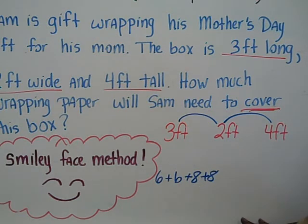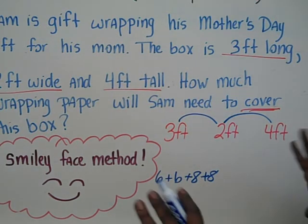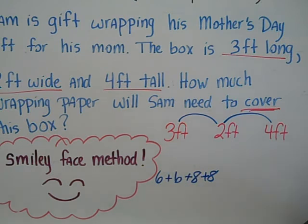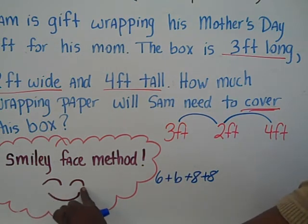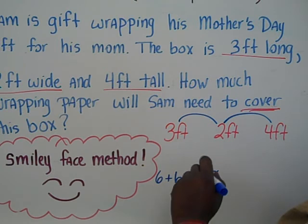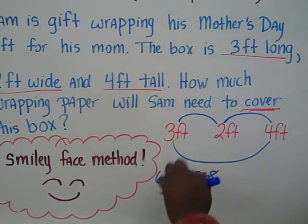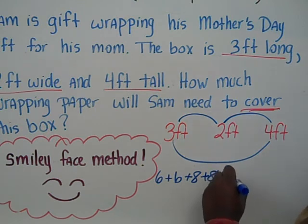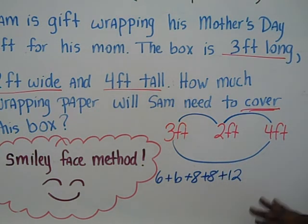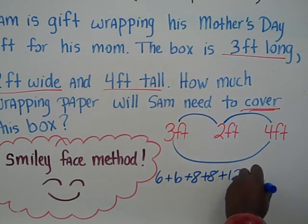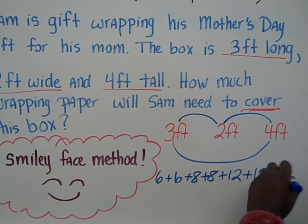And then lastly, we're going to multiply in our smile motion, 3 and the 4. So, what we have is 12. And remember, opposite sides are congruent. So, if one side is 12, there's another face that also has an area of 12.